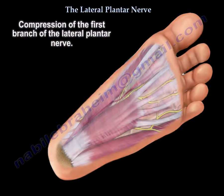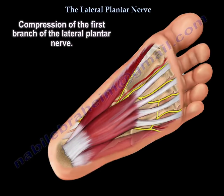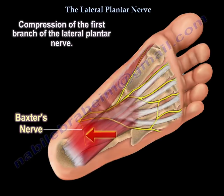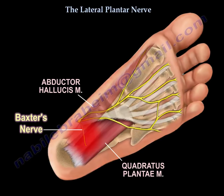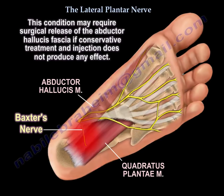This nerve pain has nothing to do with weight bearing at all. It was found that it is compression of the first branch of the lateral plantar nerve — the branch to the abductor digiti quinti — which gets compressed between the fascia of the abductor hallucis longus muscle and the medial side of the quadratus plantae.